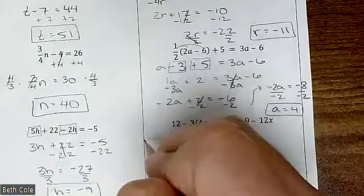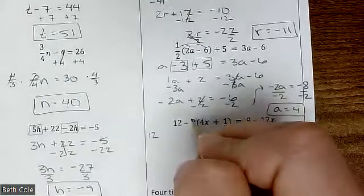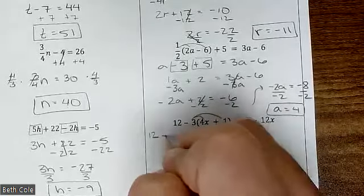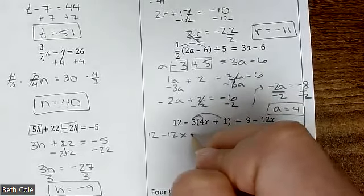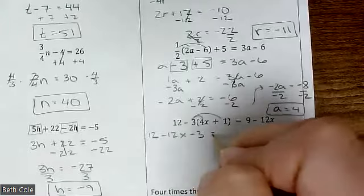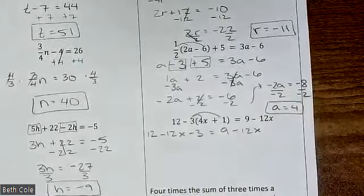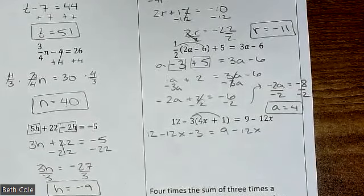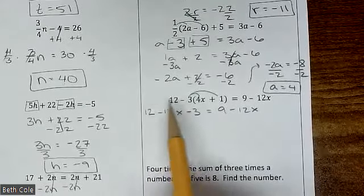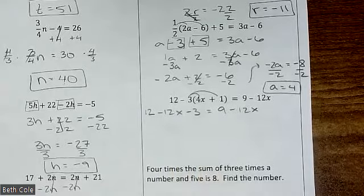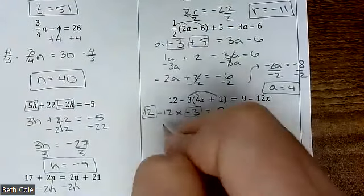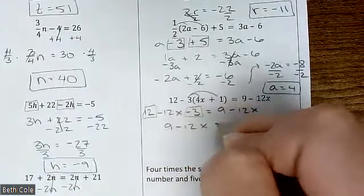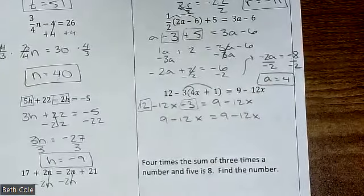For this one you're going to distribute not a 3 but a negative 3. So that will be minus 12x, and then negative 3 times 1 will be negative 3. Equals, and then basically you have to recopy that. If it looks really super long, you combine like terms — what's going to go together on this side? Good — 12 minus 3 is 9, so you get 9 minus 12x equals 9 minus 12x.